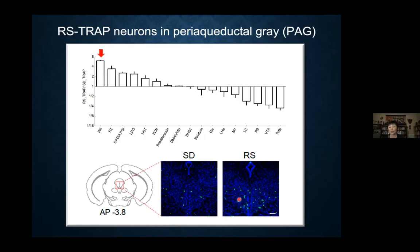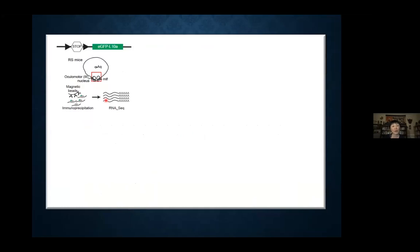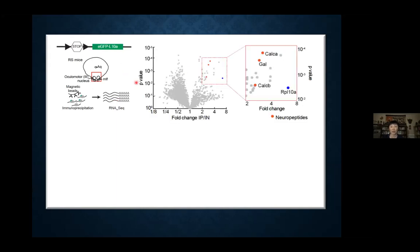We wanted to know what these labeled putative sleep neurons are, so we did gene profiling. The reporter mouse line expresses not only GFP but also the ribosomal protein L10A, which is normally attached to mRNA for protein synthesis. Using an antibody against GFP to pull down GFP, we can also pull down L10A together with the mRNA and do sequencing. This is a volcano plot where each dot is a gene.